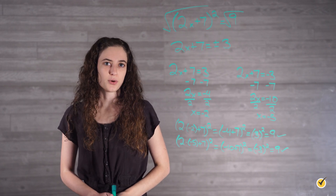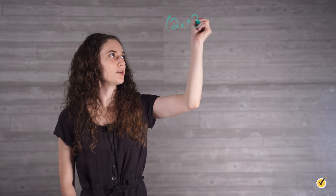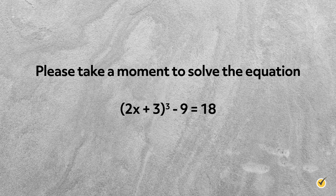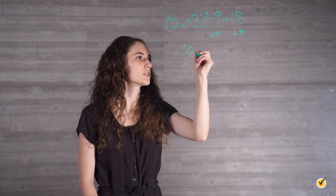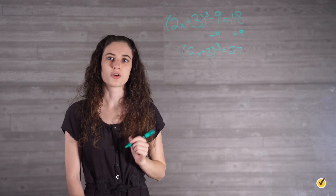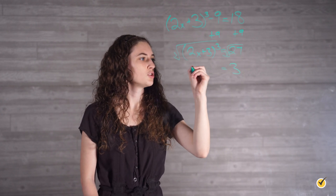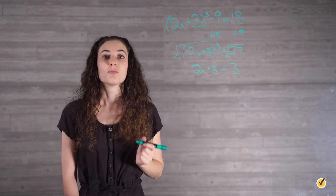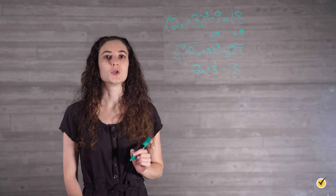Before we go, I want you to try one more on your own. Once I give you the equation, pause the video and try it on your own. Once you have your answer, press play and see if it matches up with mine. The equation is: 2x plus 3, cubed, minus 9 equals 18. First, we want to add 9 to both sides, which gives us 2x plus 3, cubed, is equal to 27. Then we want to cube root both sides to undo the third power. The cube root of 27 is 3, so 2x plus 3 is equal to 3. Remember, we don't need to consider negative 3 because we are undoing an odd exponent — you only consider both positive and negative answers when you have an even power.